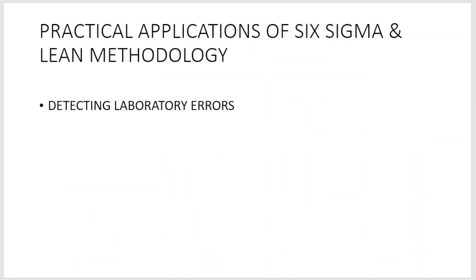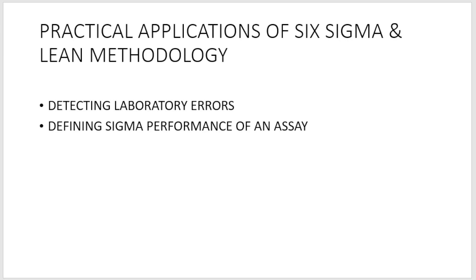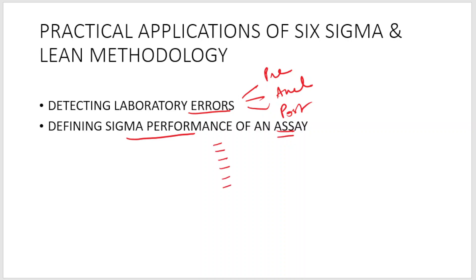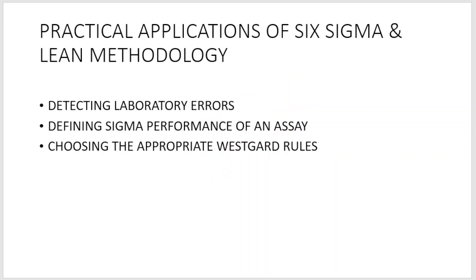The practical applications of Six Sigma and lean methodology include detecting laboratory errors and defining the sigma performance of an assay. Detecting laboratory errors means identifying pre-analytical, analytical, or post-analytical errors. Defining sigma performance of an assay allows us to use one or more methods for different analytes, compare sigma performances of two assays for any specific analyte, and also choose appropriate Westgard rules.